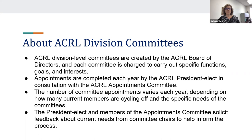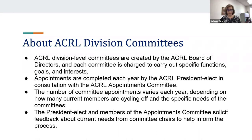ACRL division-level committees are created by the ACRL Board of Directors, and each committee is charged to carry out specific functions, goals, and interests related to the Plan for Excellence. You can find the list of division-level committees and their charges on the ACRL website. Appointments are completed each year by the ACRL president-elect in consultation with the ACRL Appointments Committee. Matching volunteers to committees takes place in the spring and completes at the end of April or sometimes into May.